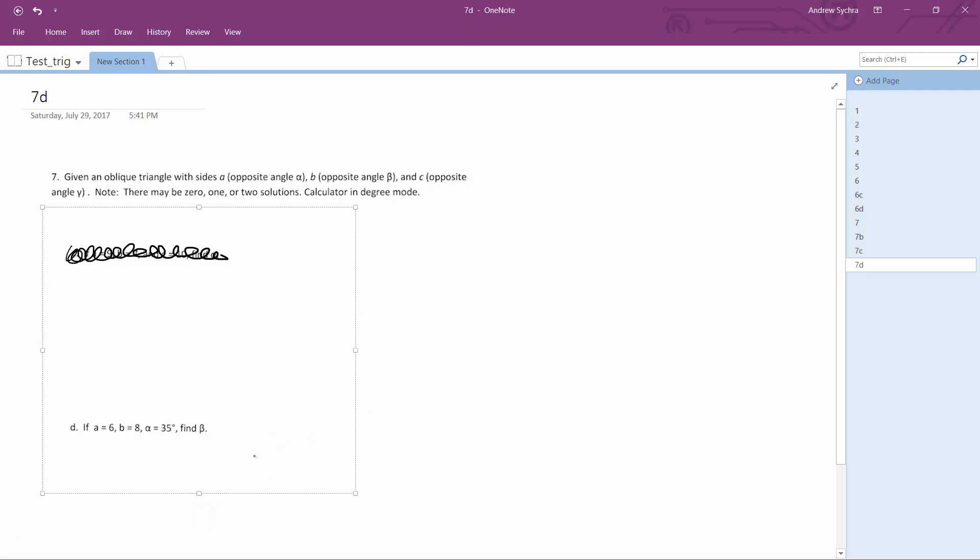Alright, solving this problem. We've got a triangle. I'll label side a as 6, and 35 degrees up here at the corresponding angle. Then b is equal to 8, and we've got angle beta, which we want to find.